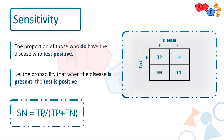So let's talk about the formula for sensitivity. It's true positive over true positive plus false negative. If you go back to the definition, it's the proportion of those who do have the disease who test positive. People who do have the disease are your true positives and false negatives, and we're only interested in those who test positive — the true positives. So it's true positive over true positive plus false negative, which is everyone with the disease.